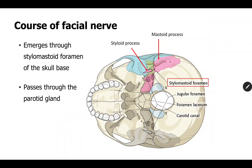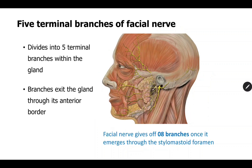Once the facial nerve leaves the brain stem, it has a short course inside the cranial cavity, then enters the internal acoustic meatus, passes through the walls of the ear, and comes out through the stylomastoid foramen — a foramen lying between the mastoid process and the styloid process. Once it emerges through the stylomastoid foramen, it enters the parotid gland. Before it enters the parotid gland, it gives three branches: one to the occipital belly of occipitofrontalis, one to the posterior belly of digastric, and one to the stylohyoid muscle.